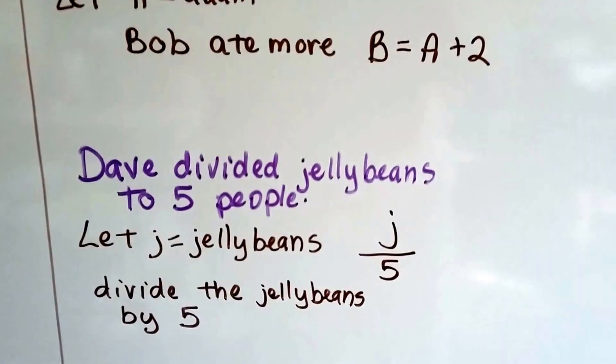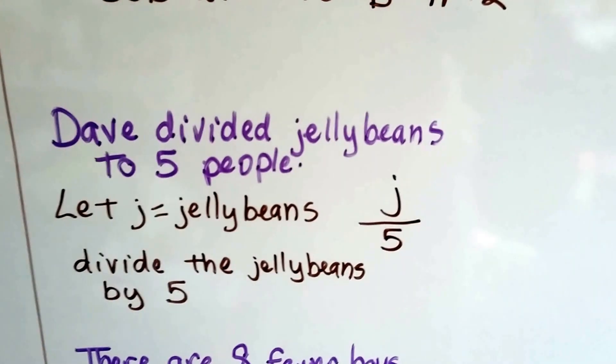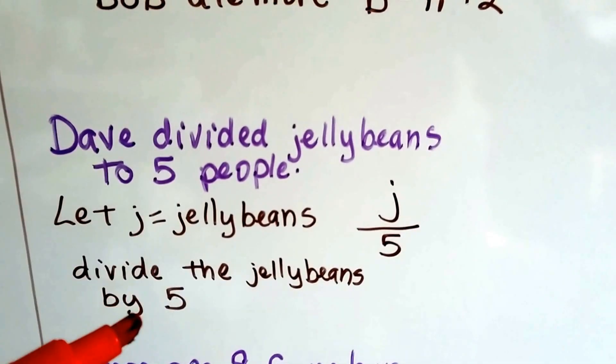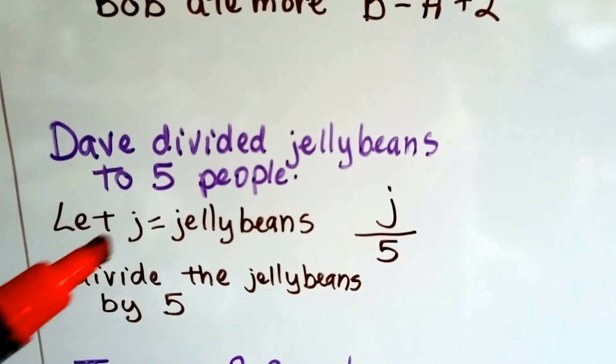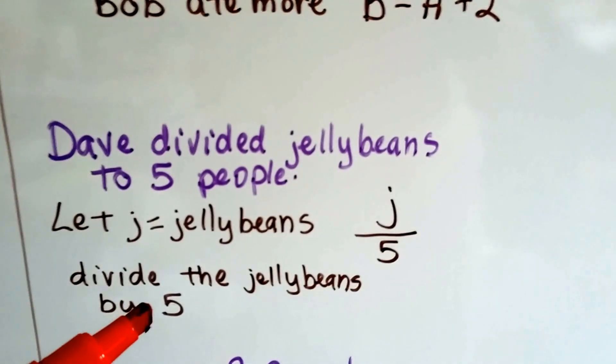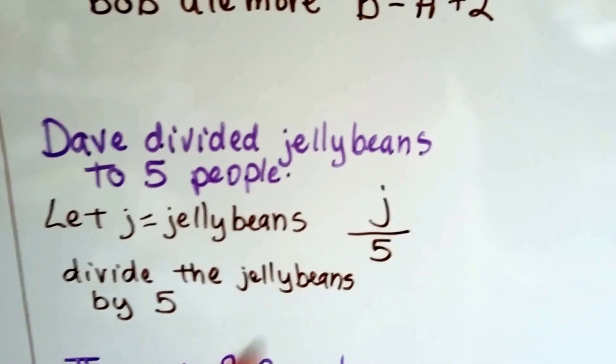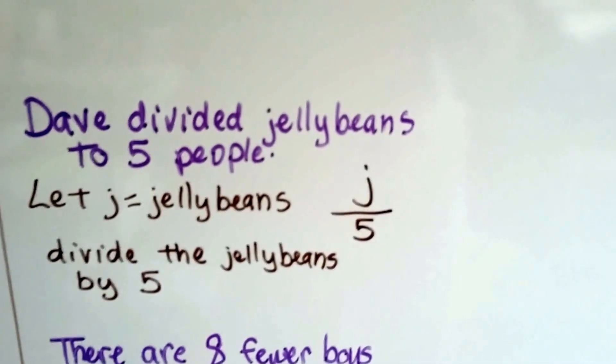Let's try this one. Dave divided jelly beans to 5 people. So we're going to let J stand for jelly beans. Doesn't that make sense? It starts with a J. So we divide the jelly beans by 5. J divided by 5 ends up being the term we come up with.